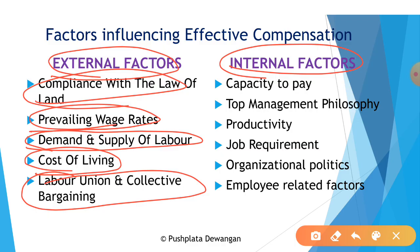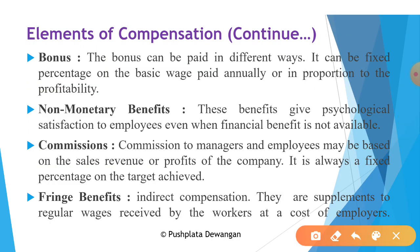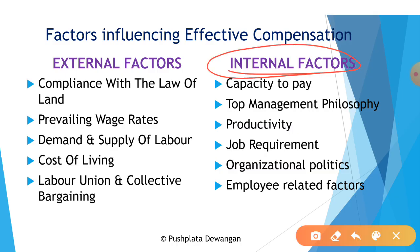The fifth external factor is labor unions and collective bargaining. Organized or industrial labor is able to claim better wages than unorganized or craft labor. Higher wages may have to be paid by the firm to its workers under the pressure of workers' unions.